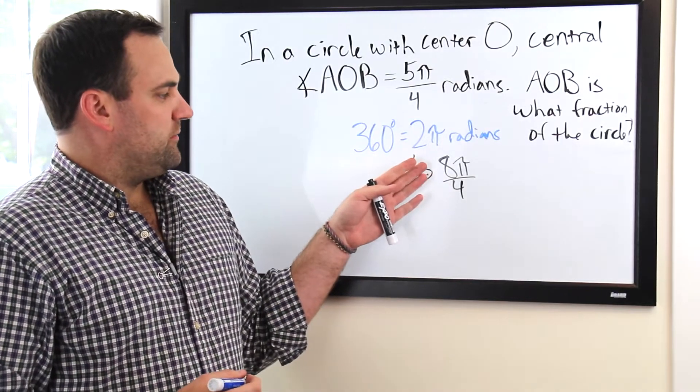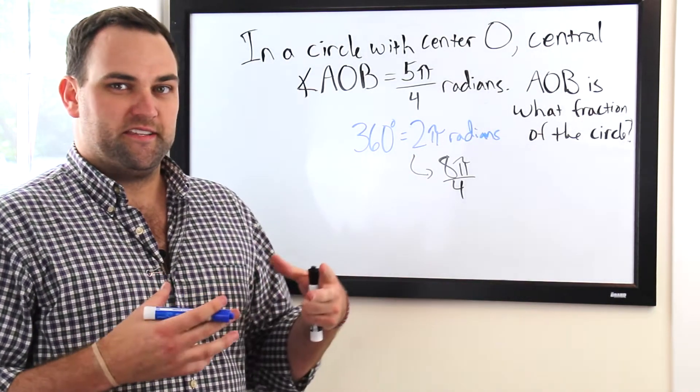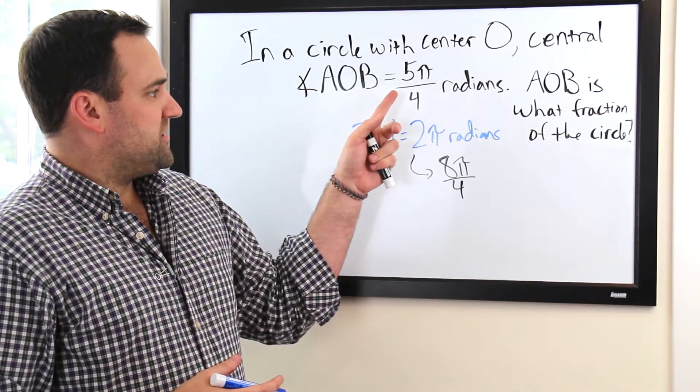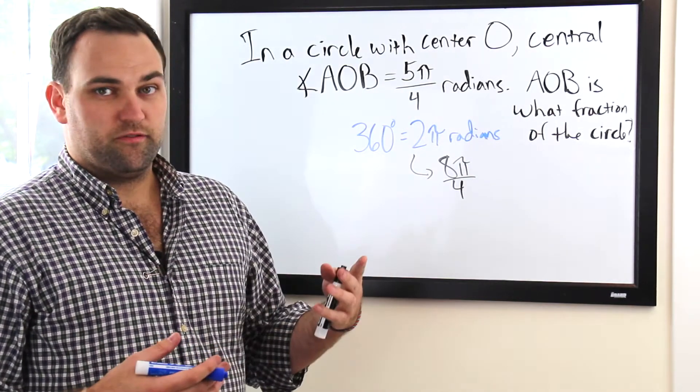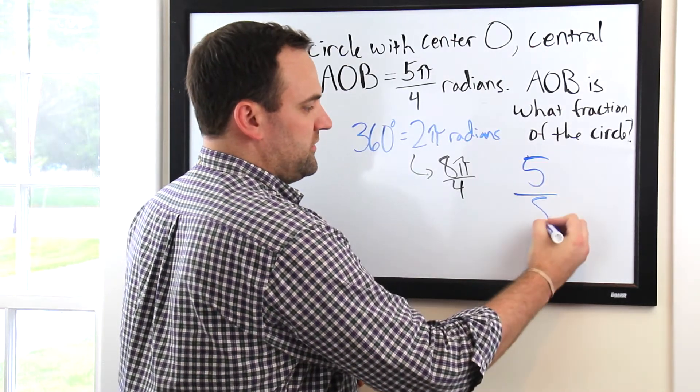Now we're saying that the whole circle is 8π. So let's think of a pizza that has 8 slices. If the pizza has 8 slices, our sector is covering 5 of those slices, since these are now comparable. So the fraction that it's covering of the whole pizza is simply 5 over 8.